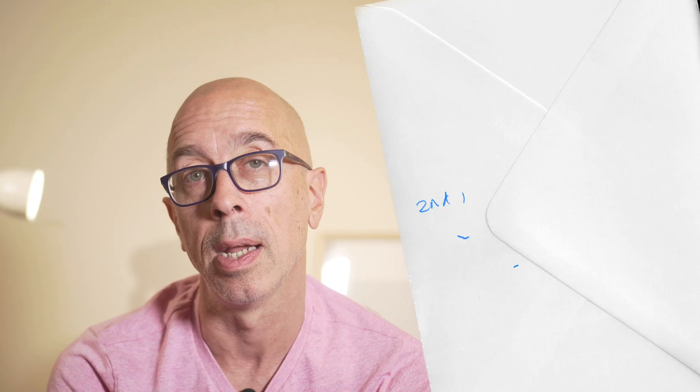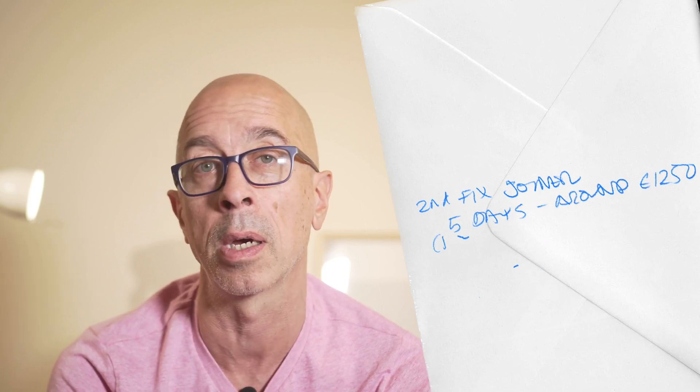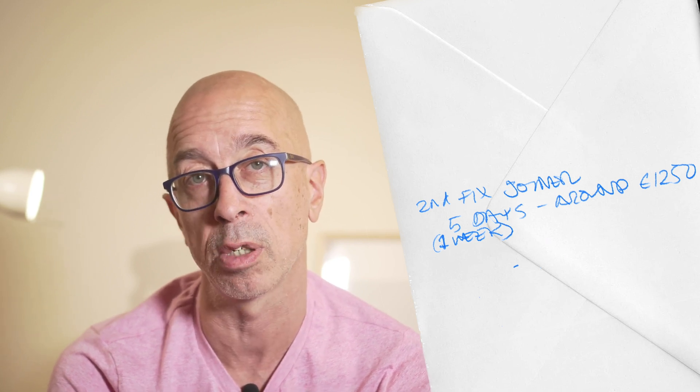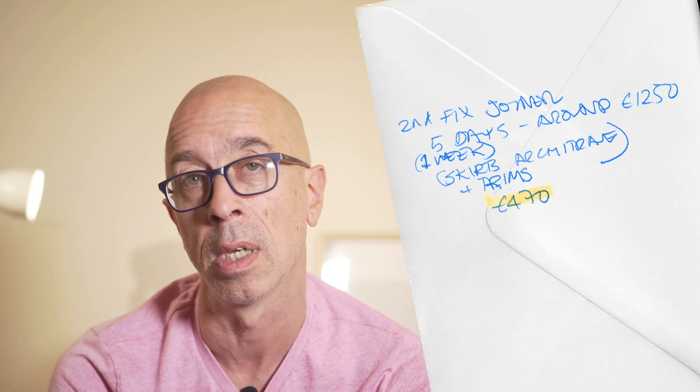Now the joiner will install this along with the skirtings, the architraves, ironmongery, and any other second fix items. So approximately this much for labor. Materials, thinking MDF skirtings and architraves, ironmongery and what have you.